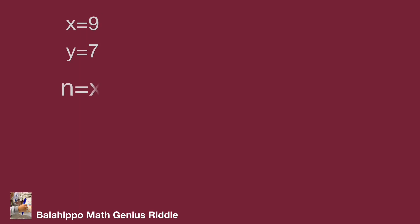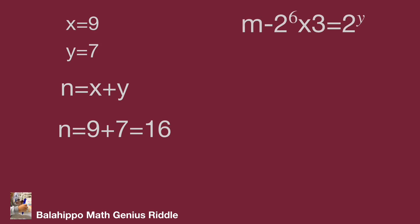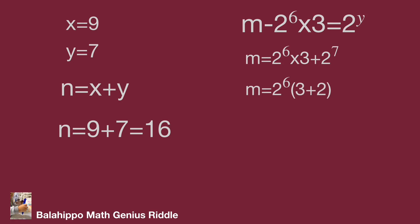Therefore n equals 16. Back to the equation: n minus 2 power of 6 times 3 equal to 2 power of y. Substituting y equals 7, we get m equal to 2 power of 6 times 3 plus 2 power of 7. Simplify to m equal to 2 power of 6 times bracket 3 plus 2 bracket, so m equals 320.